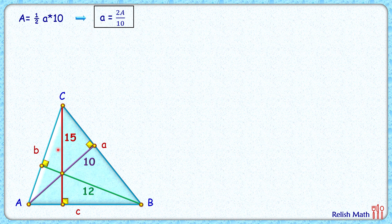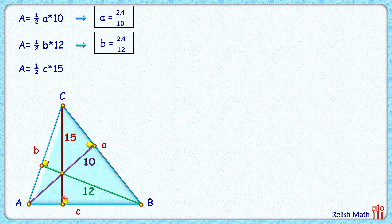Same way, we can find the area by taking AC, or b, as base, so we'll get area as half of b times 12. From here we'll get value of b as 2A divided by 12. And if we take c as the base, then 15 will be the height.